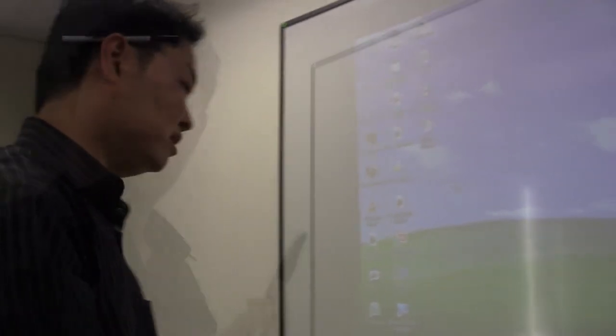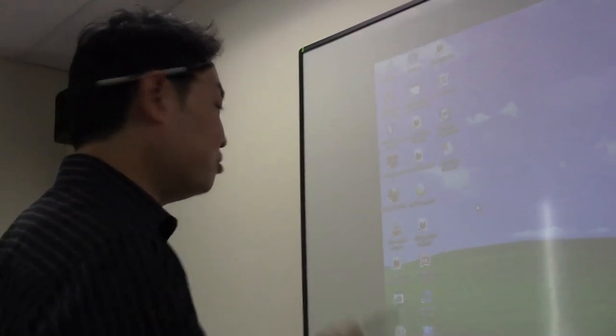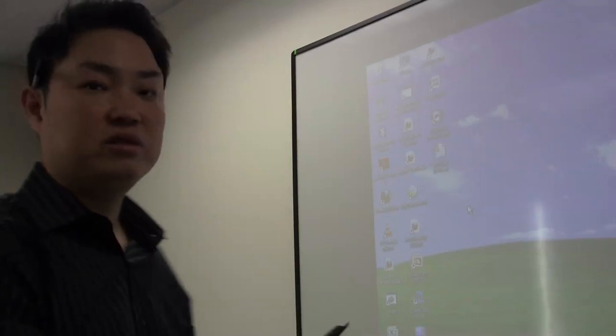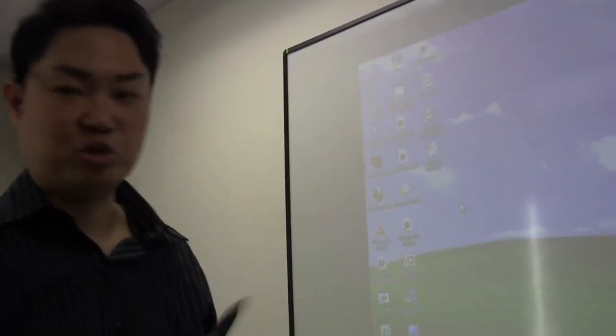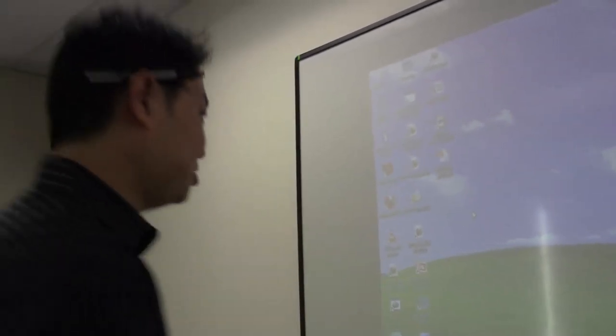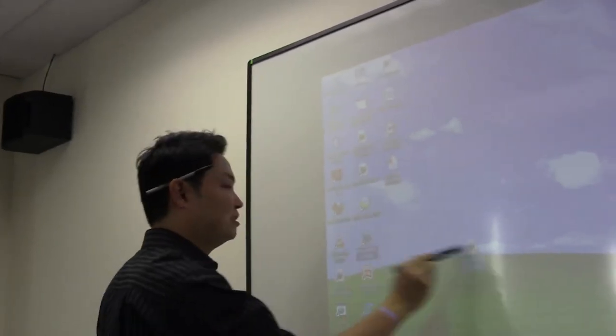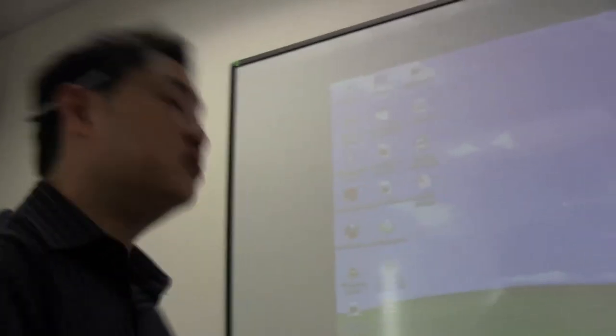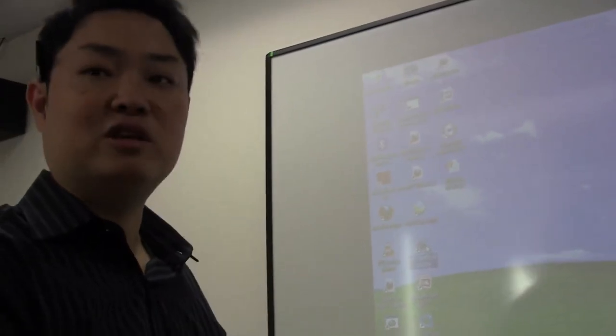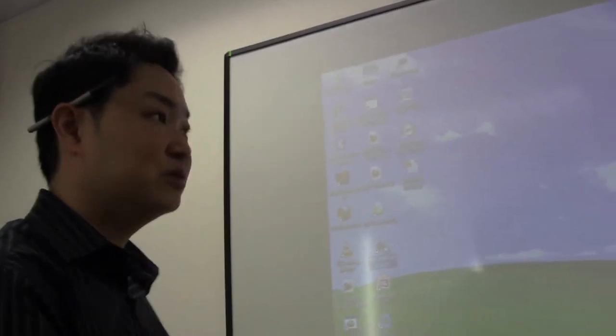The next thing I'm going to introduce to you is the tools that we have for the board. There are two different modes for the PolyVision board. One is the cursor mode, basically using your pen as a cursor, or you can use it as a marker. To toggle between a cursor and a marker mode, you need to use these tools here. These are little magnetic strips.